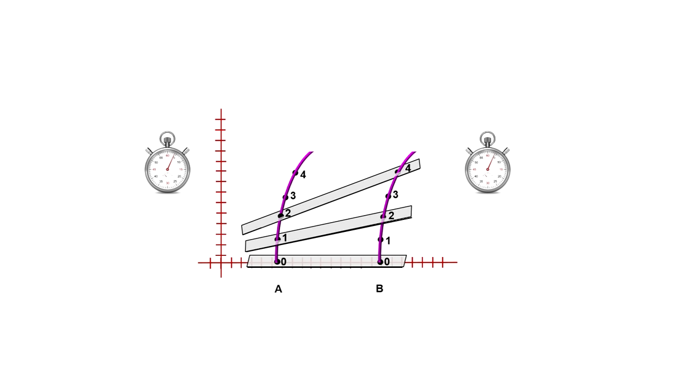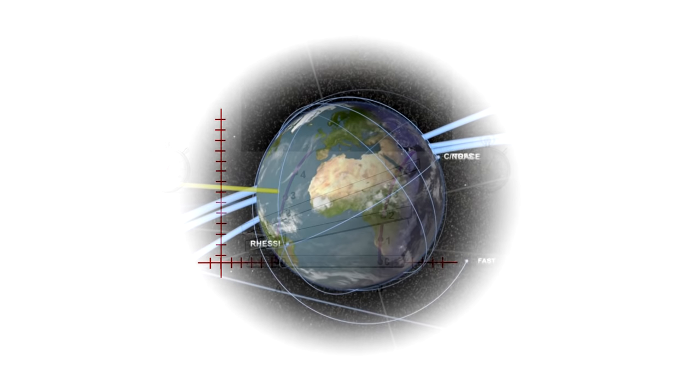The equivalence principle tells us the same thing will happen near a massive body. Gravity slows down time. Newton's gravitation has no such implication.